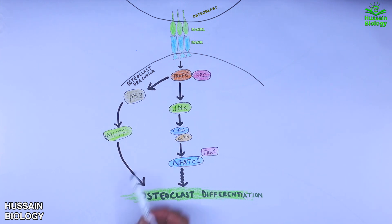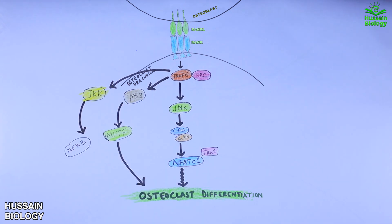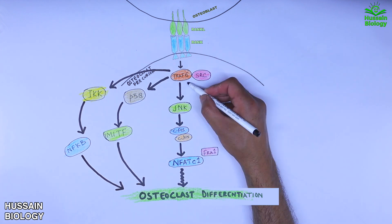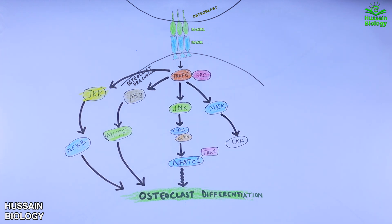We also see that TRAF6 activates the IKK protein, which in turn activates the NFκB pathway, also leading to osteoclast differentiation as part of the bone remodeling process. Furthermore, TRAF6 and SRC downregulate MEK and ERK, which also leads to activation of transcription factors driving osteoclast differentiation.